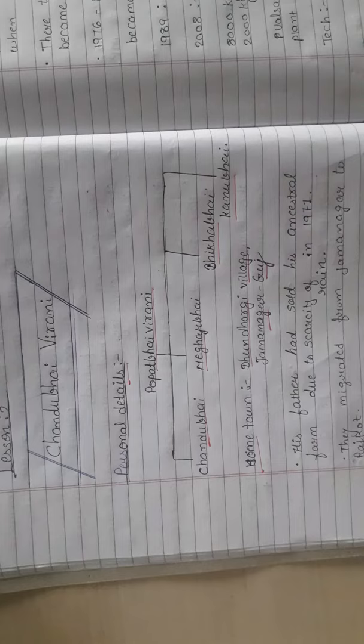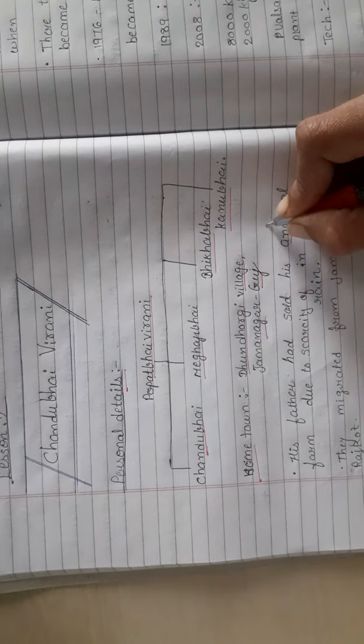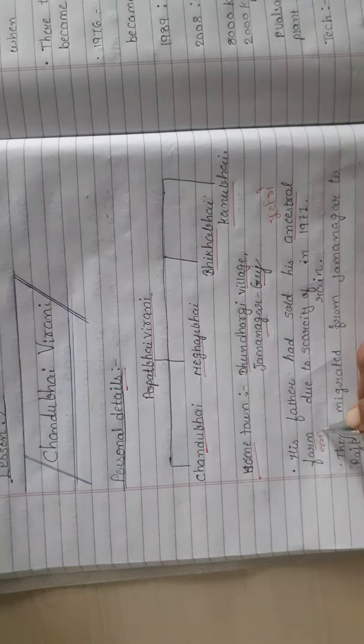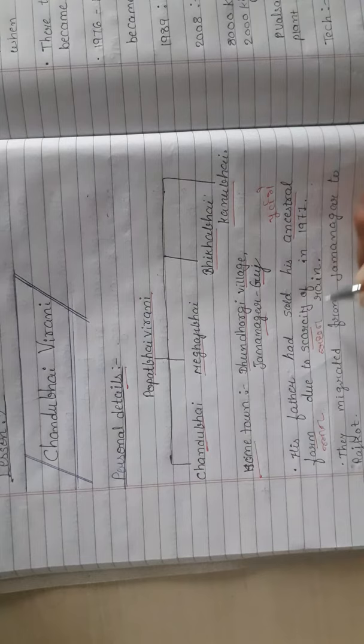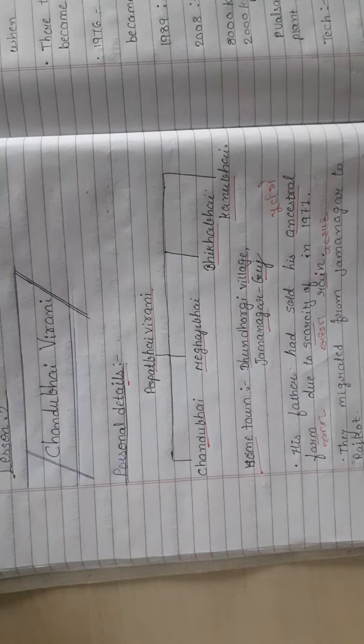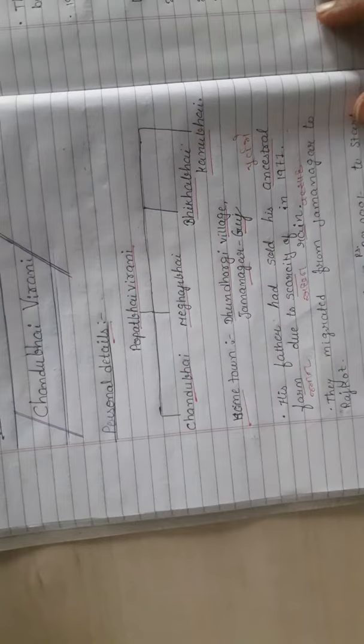His father had sold his ancestral farm due to scarcity of rain in 1931. Due to severe shortage of rainfall in 1931, his father had to sell the ancestral land, and they migrated from Jamnagar to Rajkot.